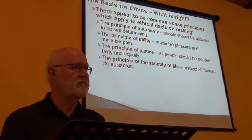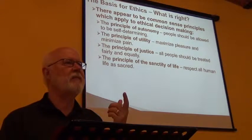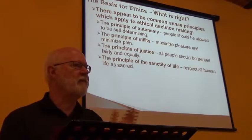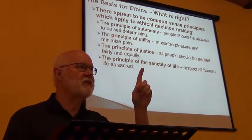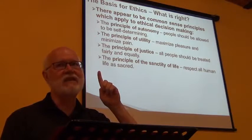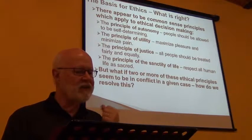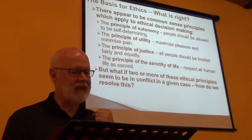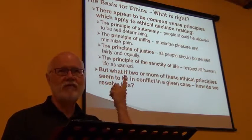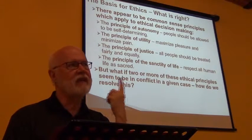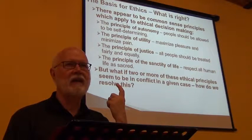That's the reason why we spend so much on homicide units. Every crime, I believe, except treason and murder, has a statute of limitations — after a certain period, if someone isn't caught they can no longer be prosecuted. That's not true with murder. There is no statute of limitations on murder because the sanctity of life insists we deal with it no matter how long it takes. But the question is: what if two or more of these ethical principles seem to be in conflict in a given case? How do we resolve this?